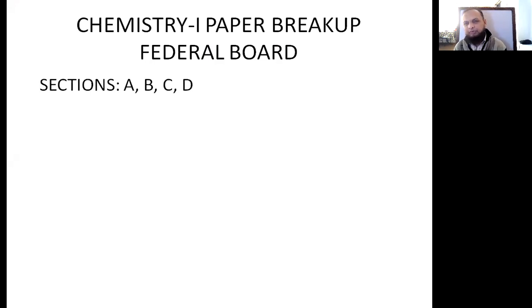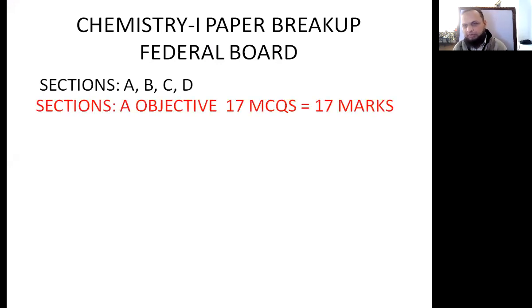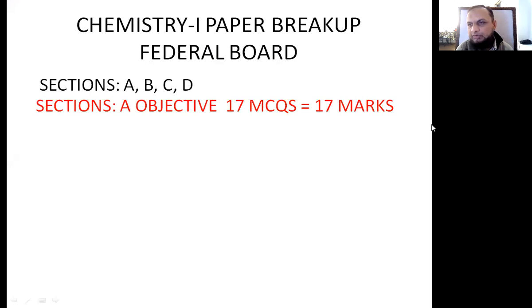In this year's chemistry paper there will be four sections: A, B, C, and D. Section A is for objectives — there will be 17 MCQs and their marks are 17.